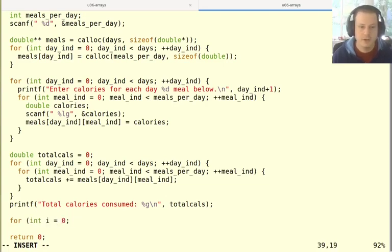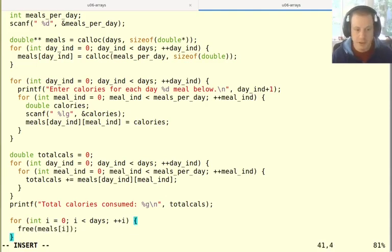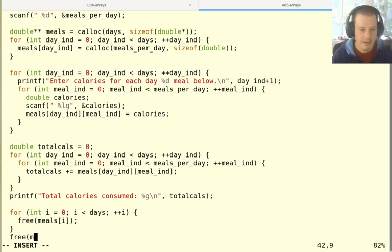And here now I'll use index i. We have to do the freeing in the opposite order of how we allocate it. So free meals i. We have to do the freeing in a loop of each inner array, and then we can free the outer array.